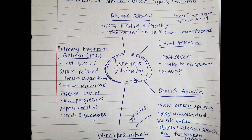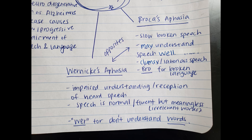Now I'm going to cover Broca's aphasia and Wernicke's aphasia, because they are basically opposites. Broca's aphasia is when you have slow, broken speech, but you may understand speech well. So if someone is talking to you and you have Broca's aphasia, you might understand everything they're saying, but when it comes to expressing yourself, it comes out very clumsy, laborious, slow, and broken. The way I remember Broca's aphasia is the word 'Bro' — I think broken language and Broca's both have 'Bro' in them, standing for broken, slow speech.